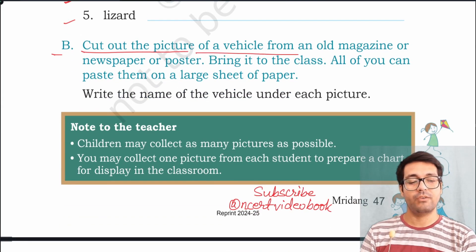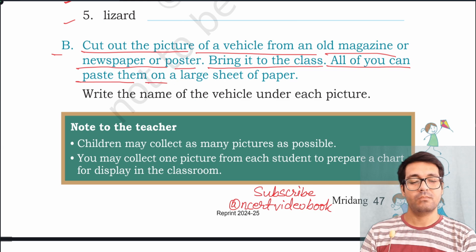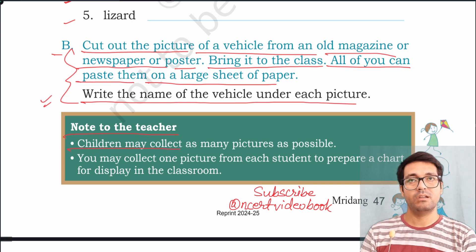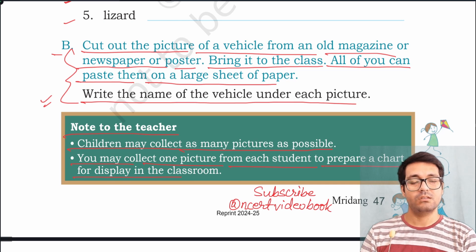B: Cut out the picture of a vehicle from an old magazine, newspaper, or poster. Bring it to class. All of you can paste them on a large sheet of paper and write the name of the vehicle under each picture. You may take help from your teacher or parents. Note to the teacher: children may collect as many pictures as possible. Collect one picture from each student to prepare a chart for display in the class.